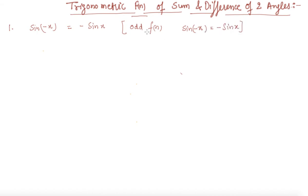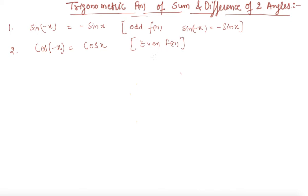So sin(-x) is called an odd function. The second formula is cos(-x) = cos(x), so cosine is an even function. For sine, we can straightforwardly take the negative sign outside and write sin(-x) = -sin(x).